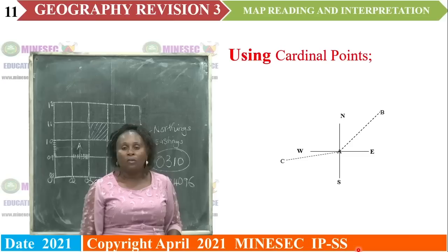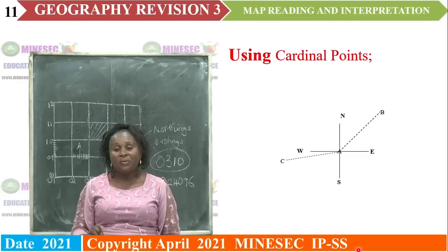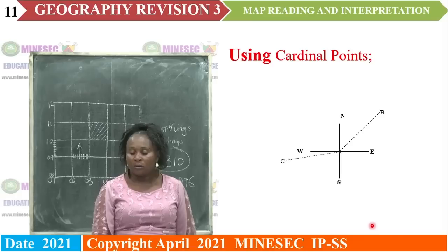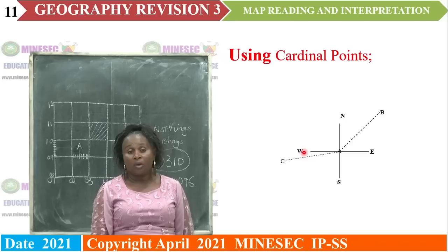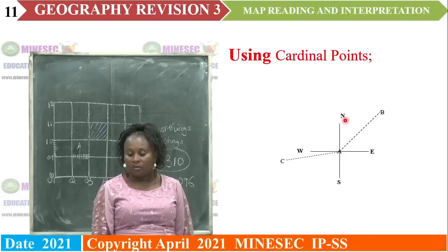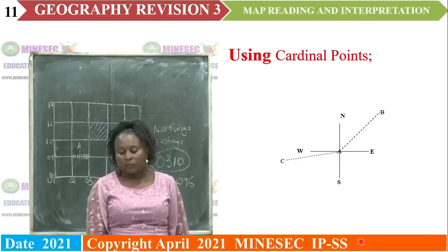The next way to locate places on a topographic map is by using the cardinal point. The main cardinal points are the north, the east, the south, and the west. But in effect, there are 16 cardinal points: the north-east, the south-east, the south-west, the north-west — you can break these down further into north-north-east, north-north-west to come up with the 16 cardinal points.